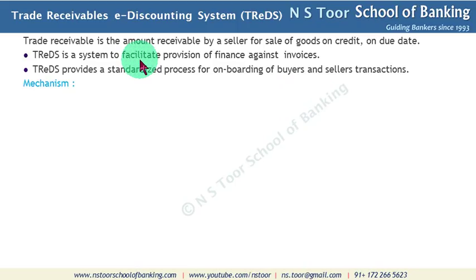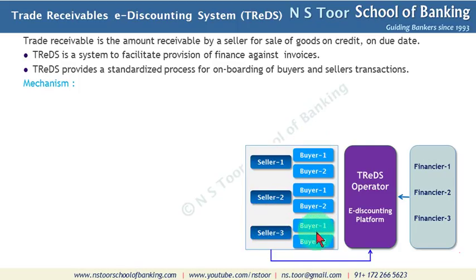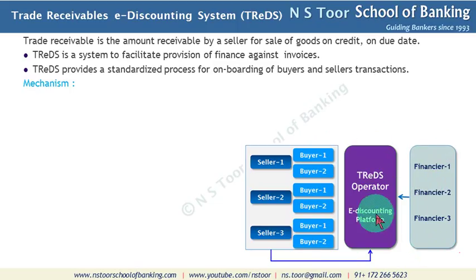Let us now understand the mechanism of TReDS. Here we have a graph relating to TReDS. There are different sellers, there are their buyers, and there are financiers. And in between we have the TReDS system with the TReDS operator.